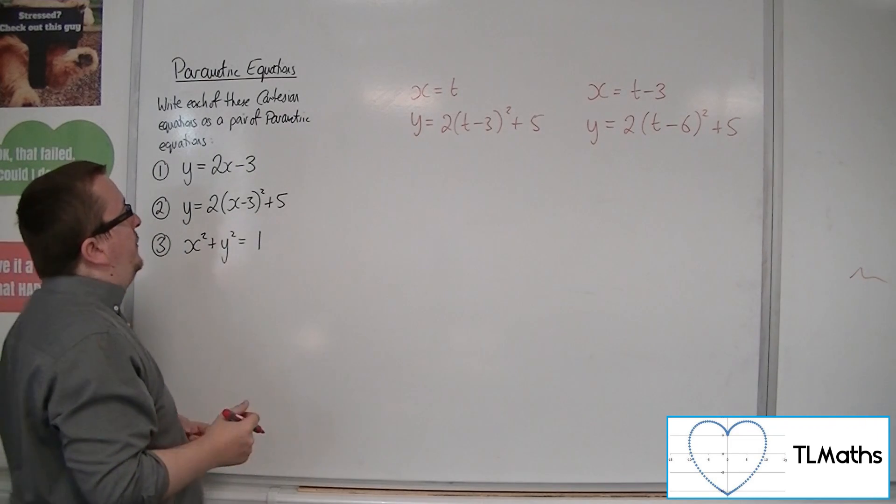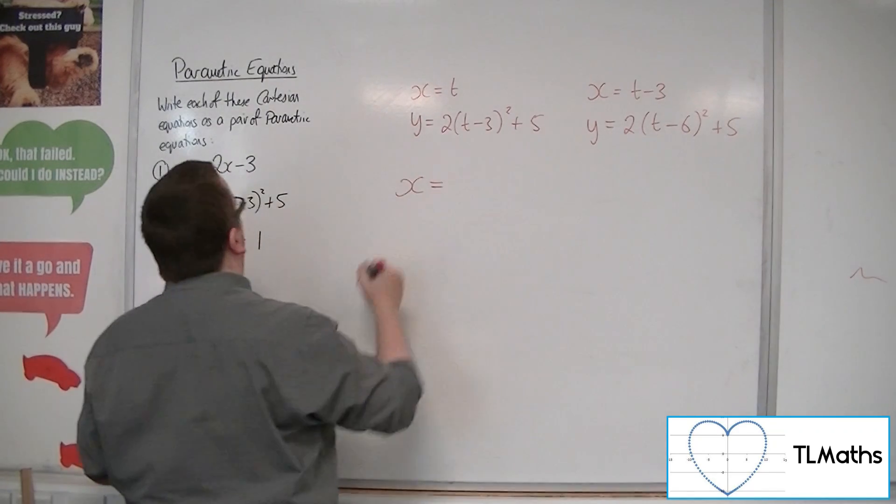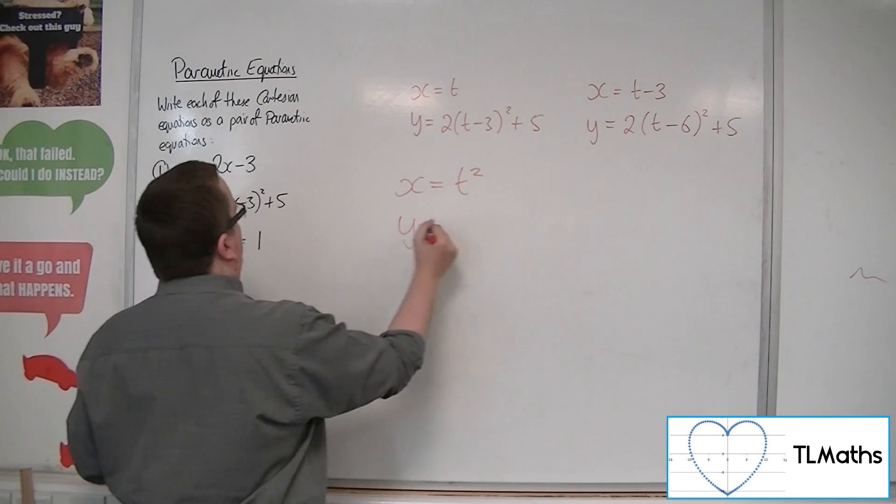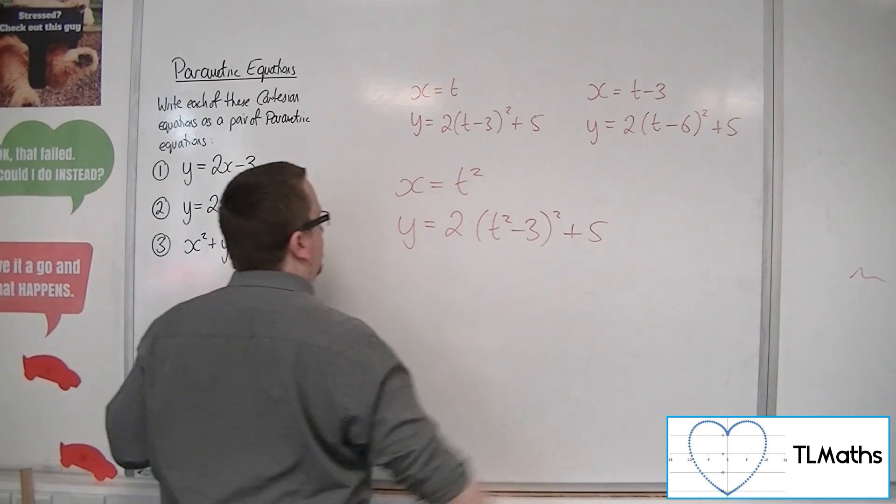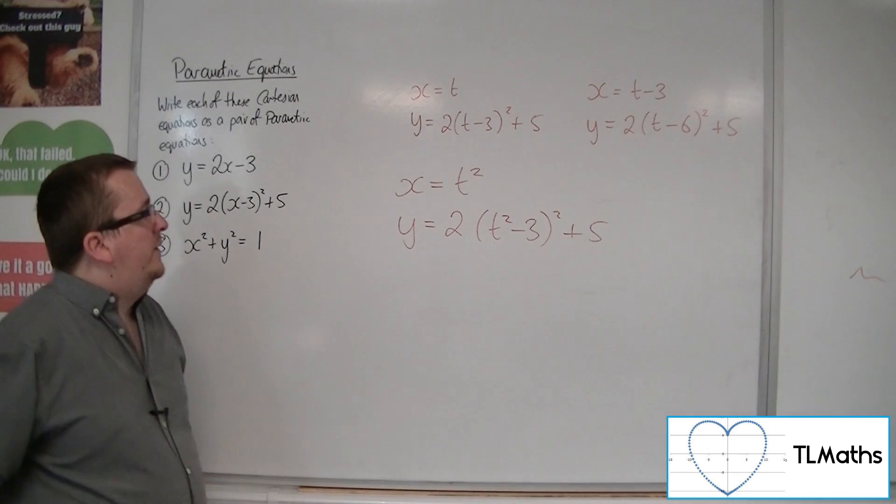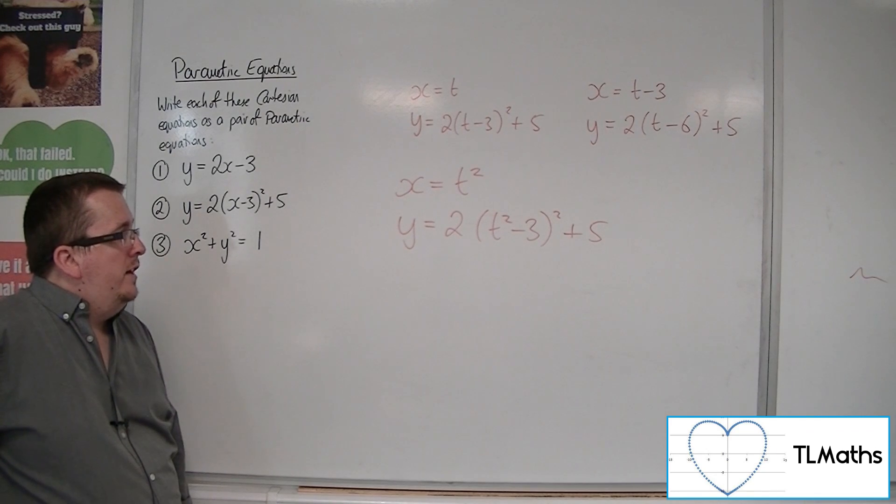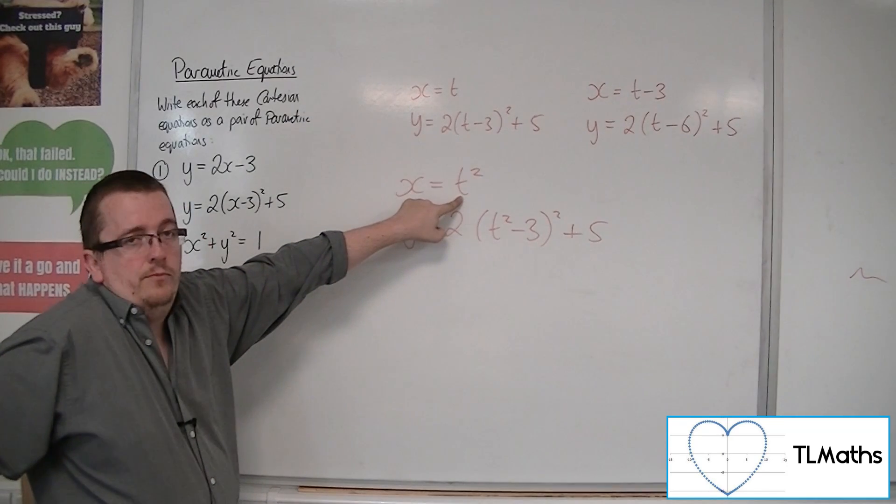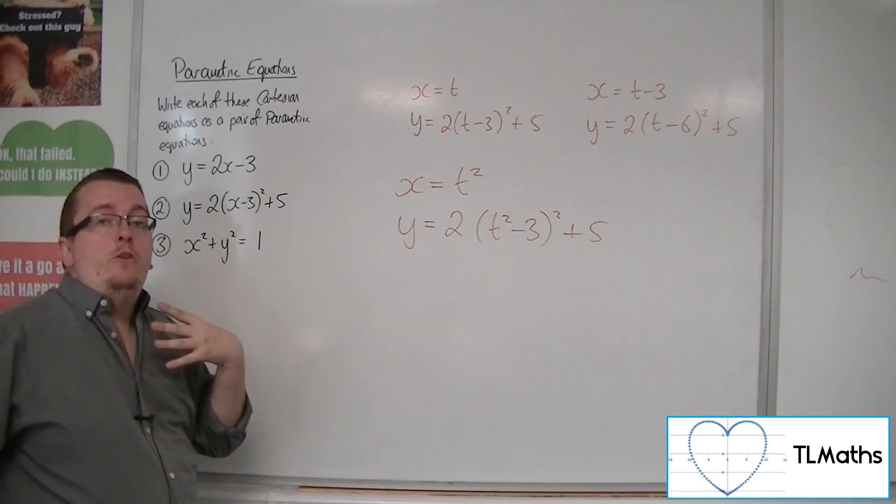Or we could say that x is equal to t squared, for example. And so y is equal to 2 lots of t squared minus 3 squared plus 5. Now, you've got to be a little bit careful in some of these cases because the way that I've defined it there, although it will trace out the curve, it might not trace all of it out. Now, the problem with this one is that because I've set x to be t squared, potentially, well, absolutely in this case, x can now not be negative.